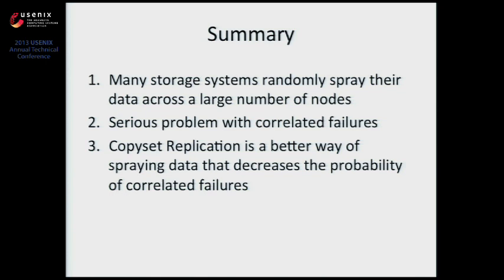Questioner: Suppose I'm more interested in the expected number of files unavailable in a given year instead of the probability that all of them survive. What changes? Speaker: That's a point we make in the paper. The expected amount of data you will lose in a year for this simple model is exactly the same under random replication or under any of these other schemes like min copy sets or copy set replication. The expected data loss is the same for correlated failures. All we're doing is making failures a lot more rare; each time you lose data you lose more, but the product of those two is always constant.